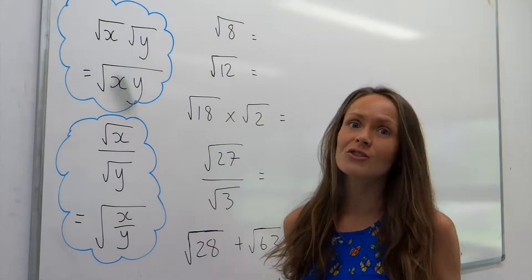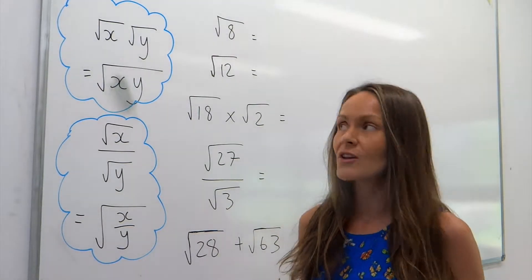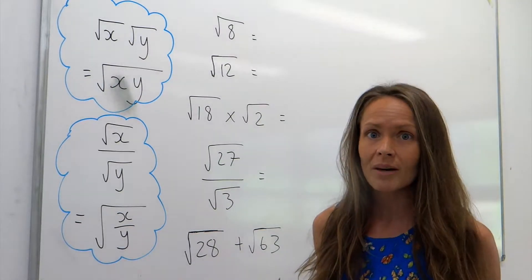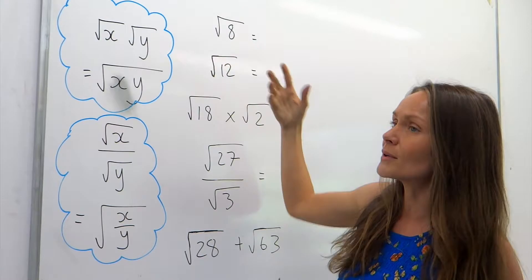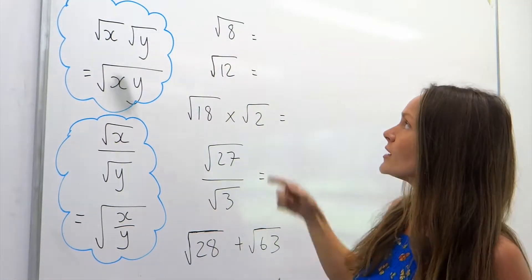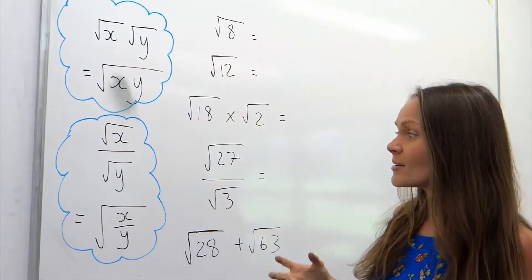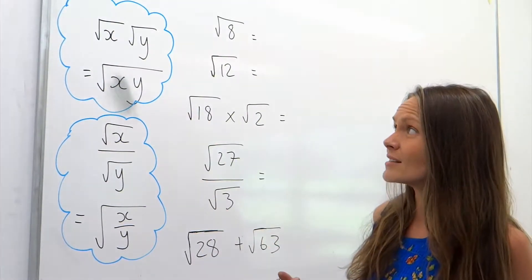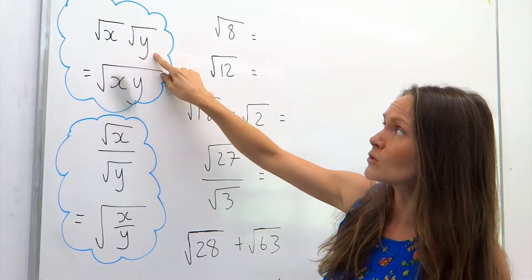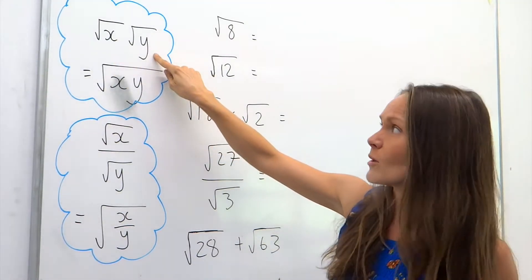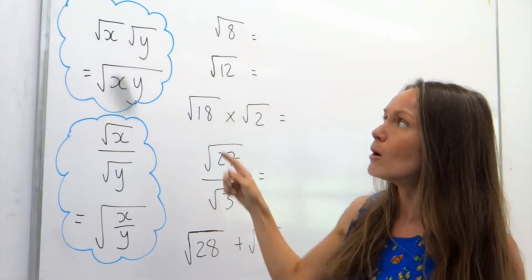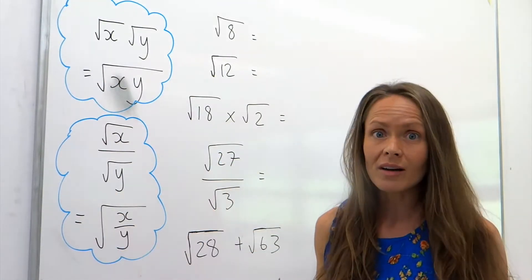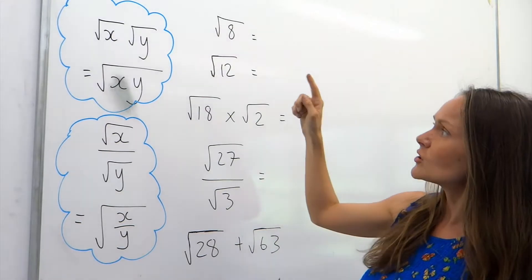In this video I'm going to show you how to simplify surds. These are surds - they're just numbers that you can't root to find a whole number. If I was to square root 8 I would get a decimal answer, so this is an example of a surd. When simplifying surds I'm going to be using these two properties: if you square root a number and multiply it by another square root, you get the same answer as multiplying those two numbers together and square rooting the result. Likewise for division.